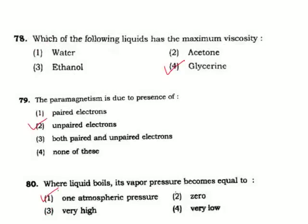Question 78: Which of the following liquid has maximum viscosity — glycerine has maximum viscosity; it is a very viscous liquid. Question 79: Paramagnetism is due to the presence of — paramagnetism is due to unpaired electrons present. Correct answer is Option 2.